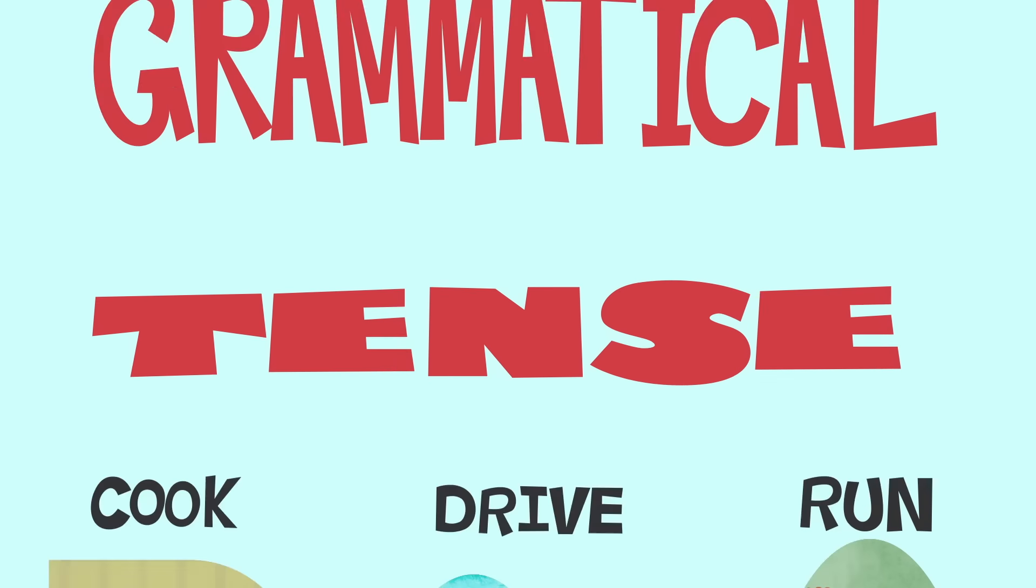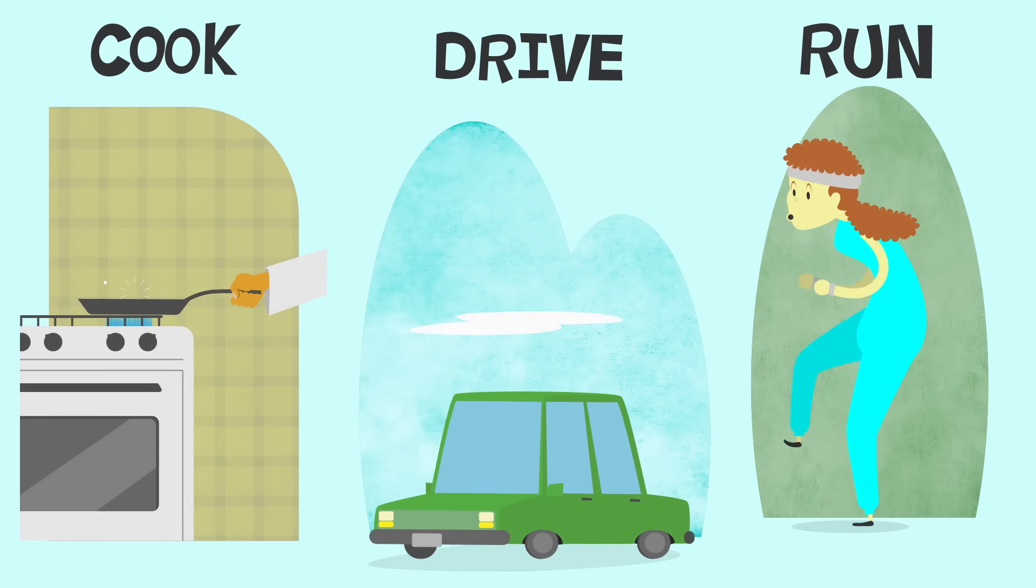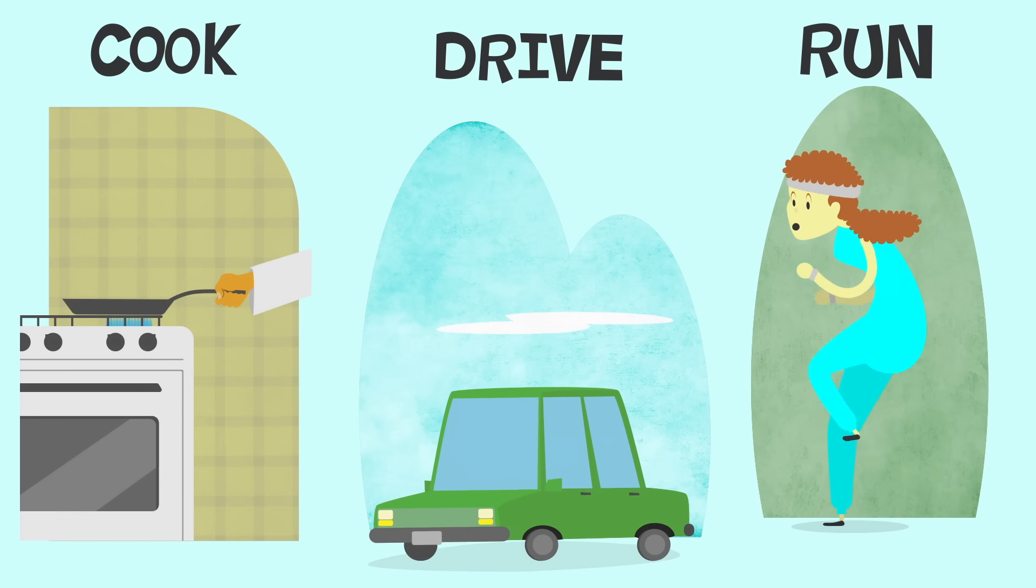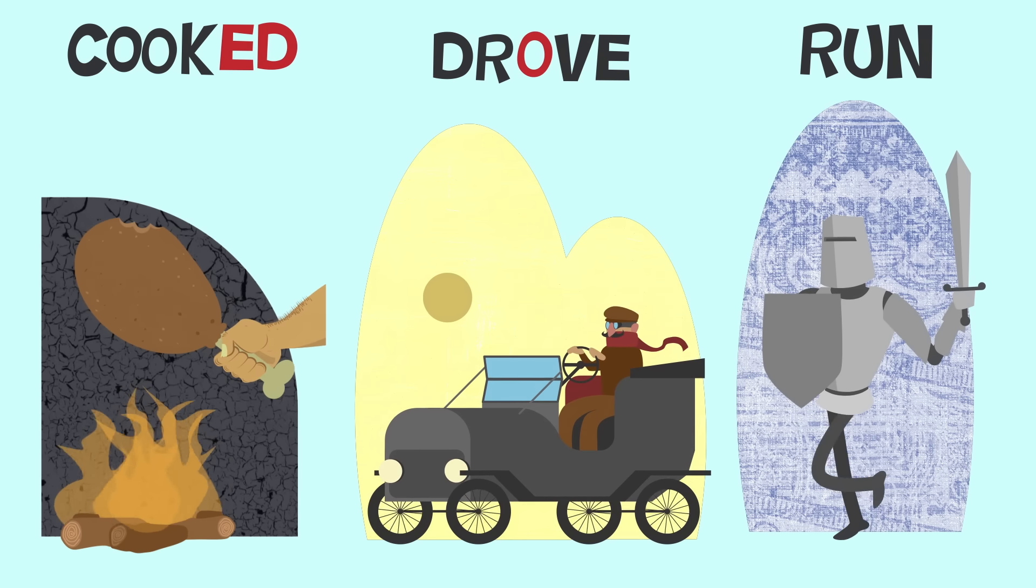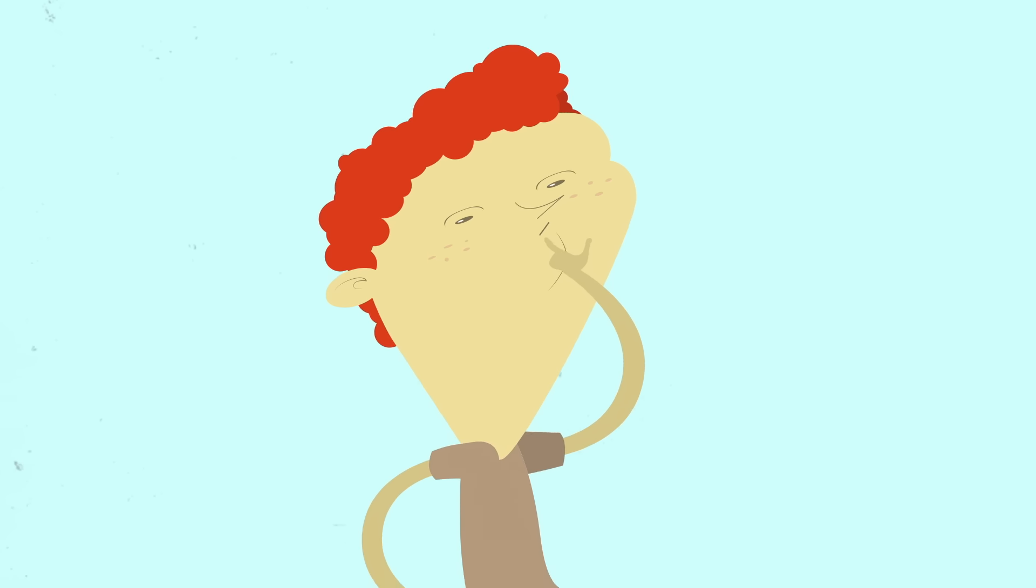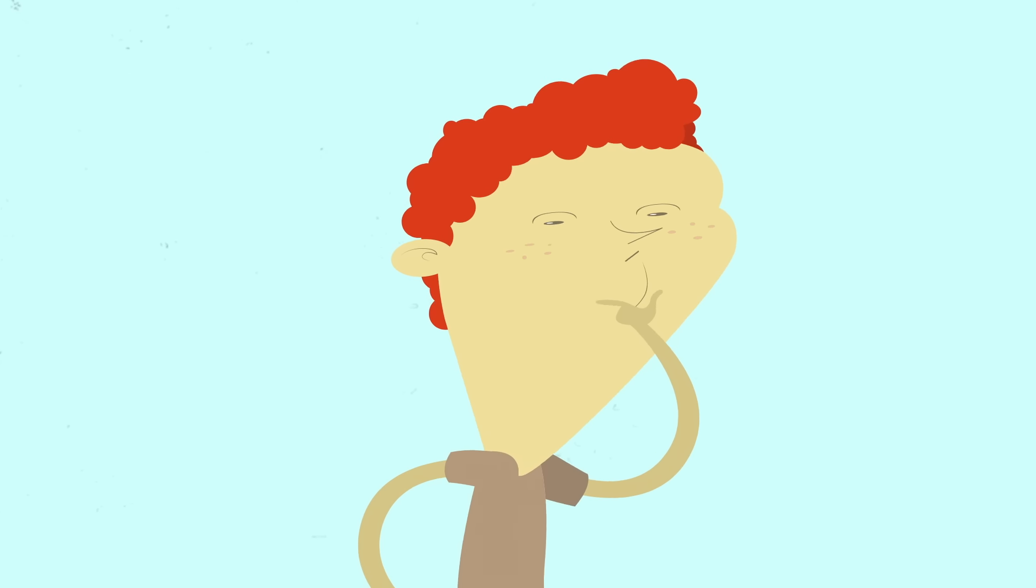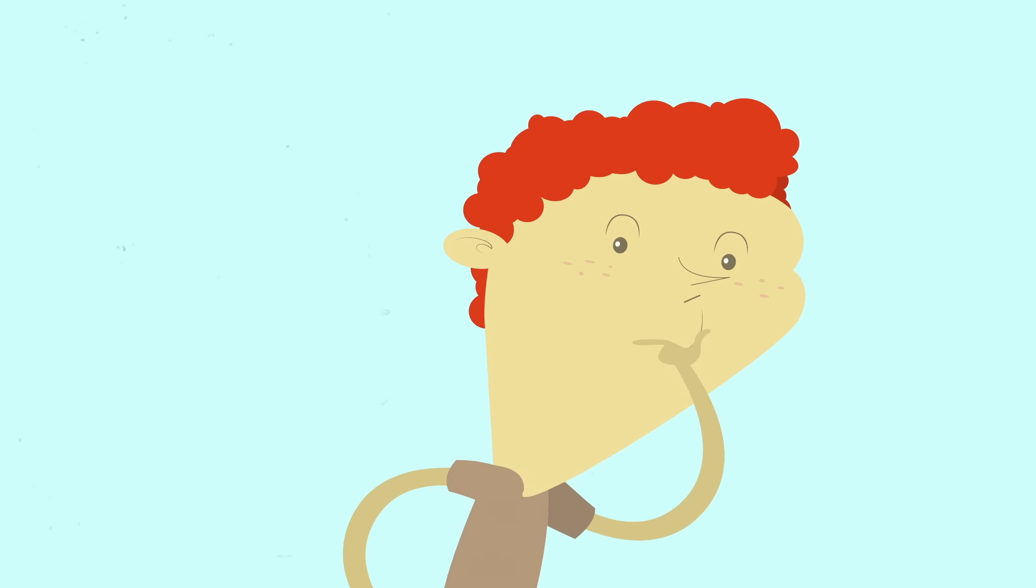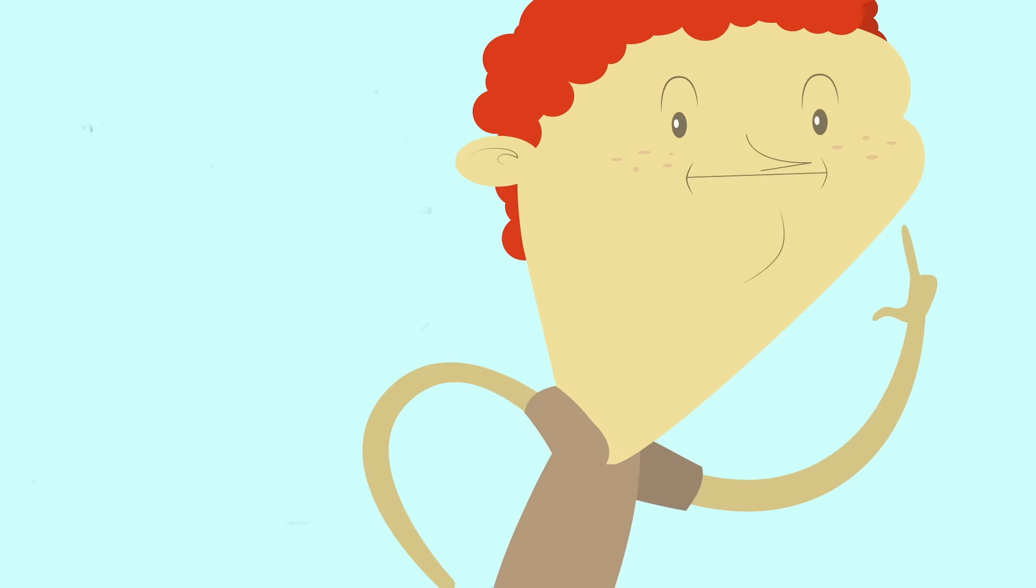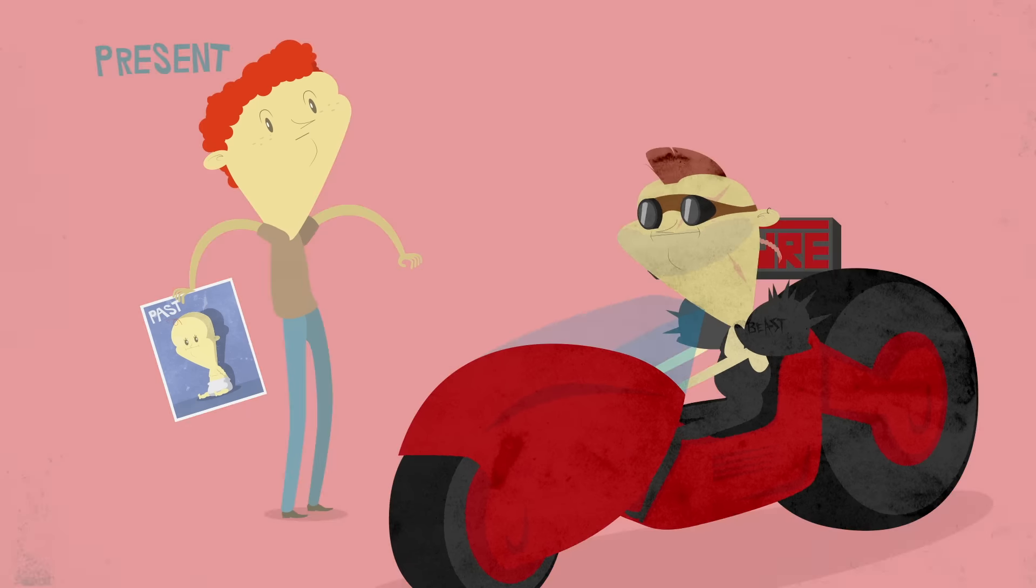Grammatical tense is how languages talk about time without explicitly naming time periods, by instead modifying verbs to specify when action occurs. So how many different tenses are there in a language like English? At first, the answer seems obvious. There's past, present, and future.